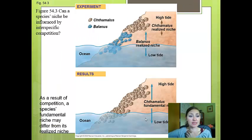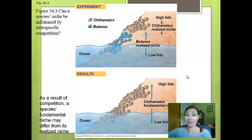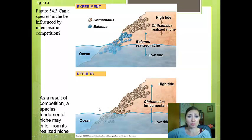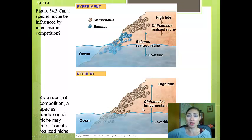In a realized versus a fundamental niche, we see what area an organism would occupy without competition — that's the fundamental niche — versus what space it actually occupies, which is the realized niche. In this example with barnacles, the chthamalus barnacles are much higher up on the rocks and the balanus are lower. If we were to remove the balanus entirely, the chthamalus cover the entire rock — that is their fundamental niche. Because of competition, they have a much smaller area they actually reside in.